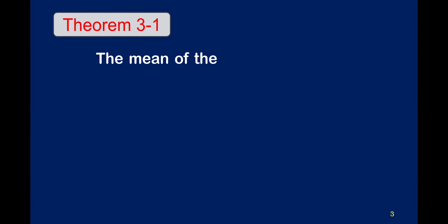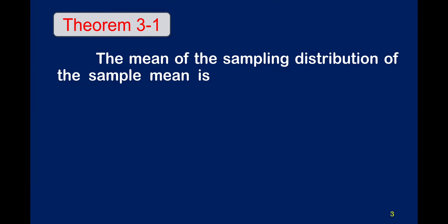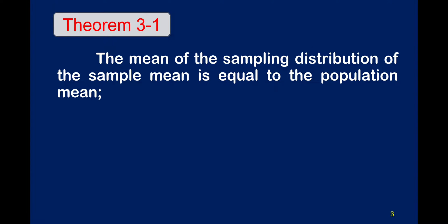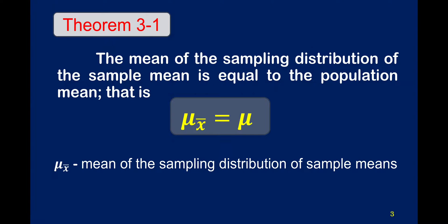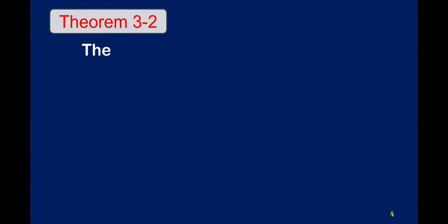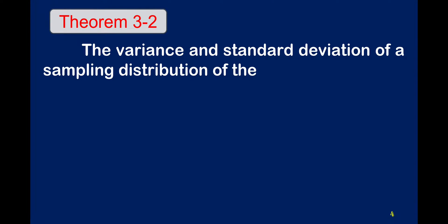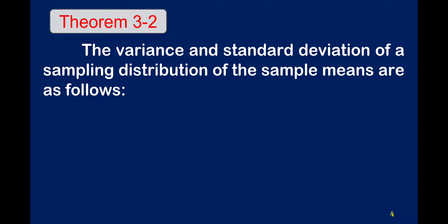Theorem 3-1: the mean of the sampling distribution of the sample mean is equal to the population mean. That is, mu sub x-bar — the mean of the sampling distribution of sample means — is equal to mu, which is the population mean. Under Theorem 3-2, the variance and standard deviation of the sampling distribution of the sample means are as follows.